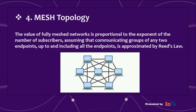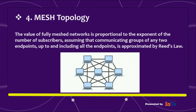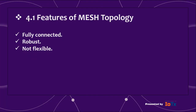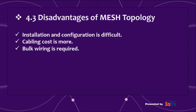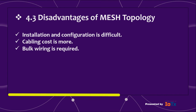Number four: mesh topology. The value of fully meshed networks is proportional to the exponent of the number of subscribers, approximated by Reed's Law. Features: fully connected, robust, and not flexible. Advantages: each connection can carry its own data load; it is robust; faults are diagnosed easily; and it provides security and privacy. Disadvantages: installation and configuration is difficult, cabling cost is more, and bulk wiring is required.